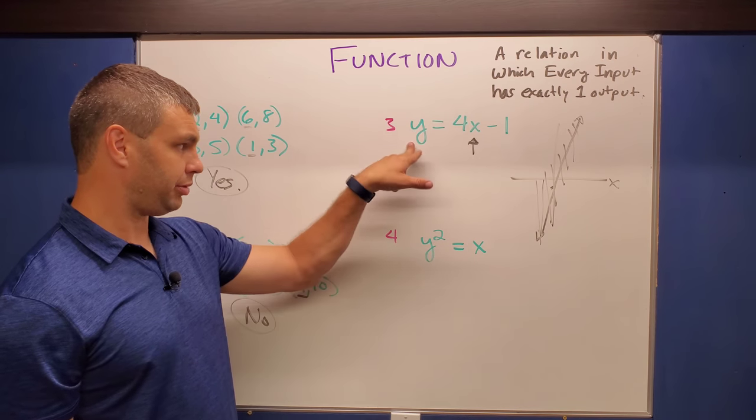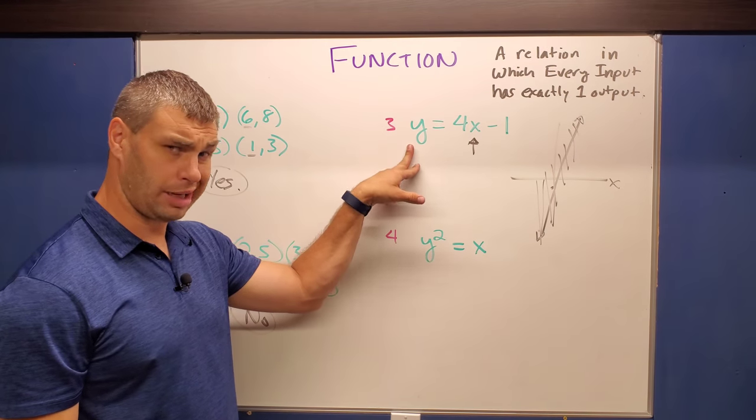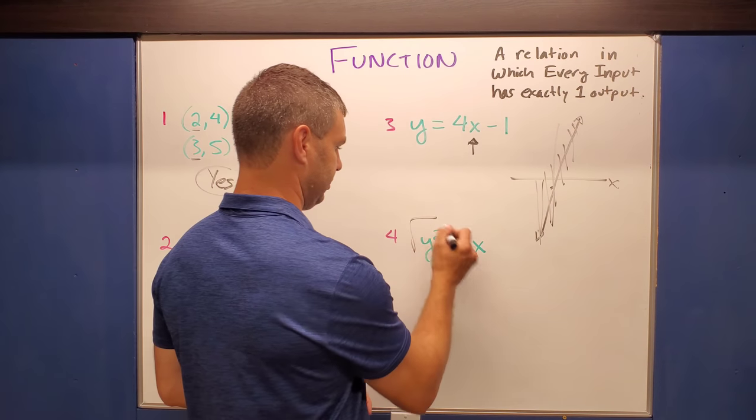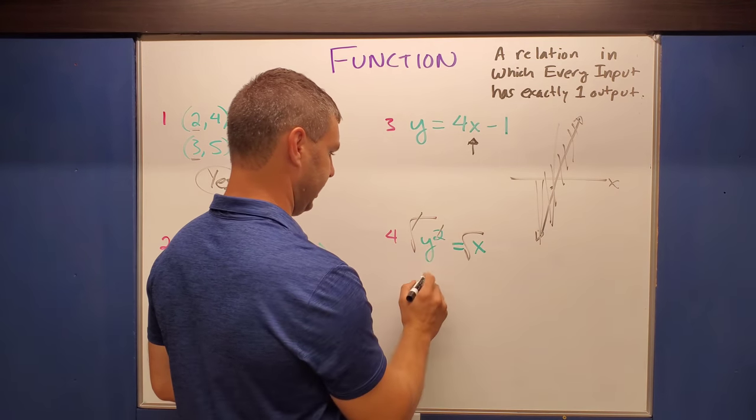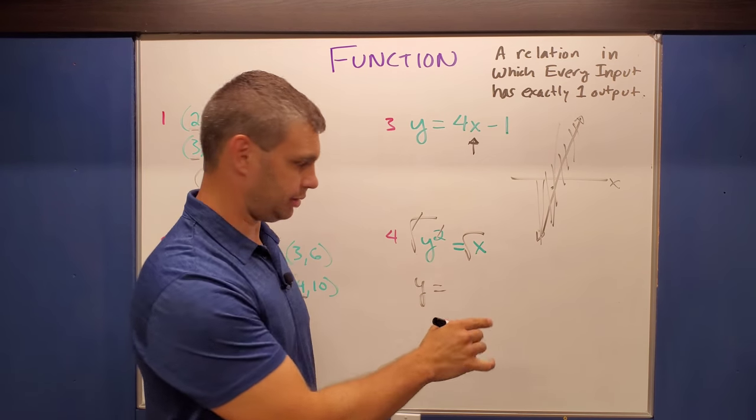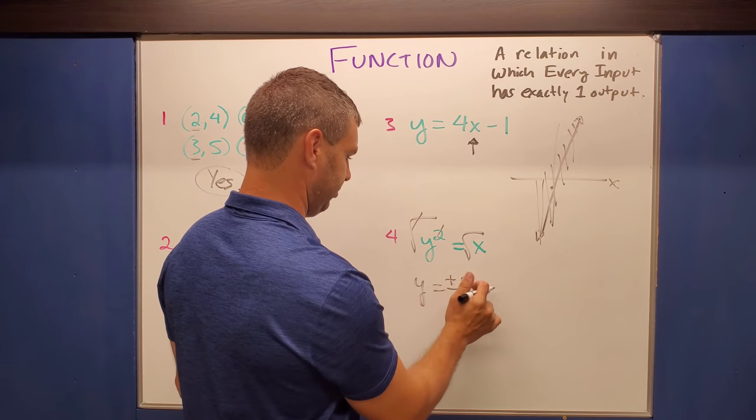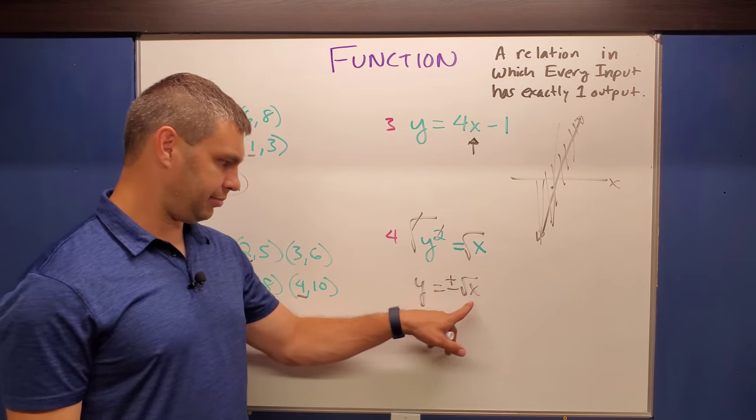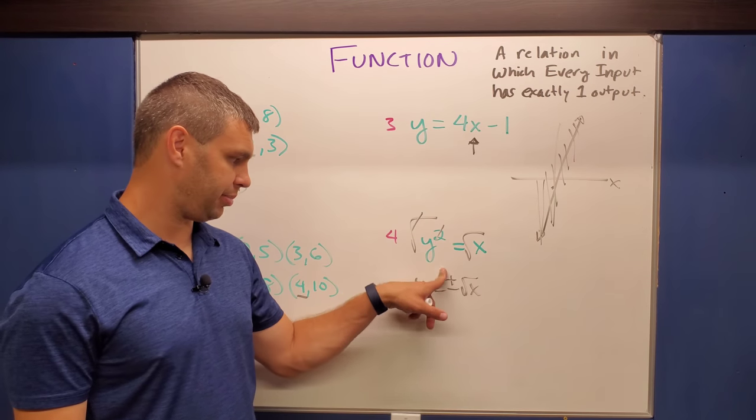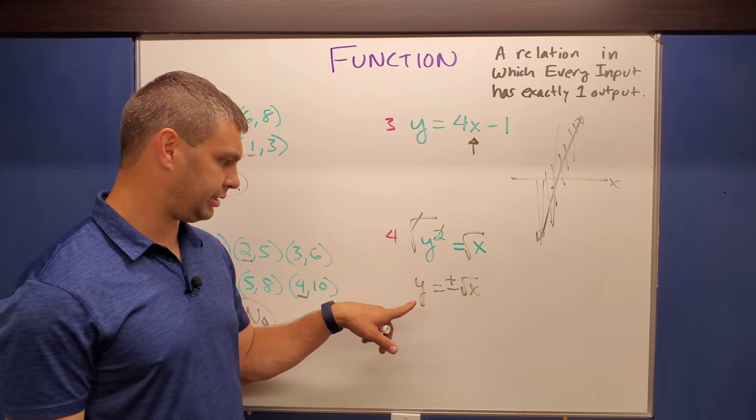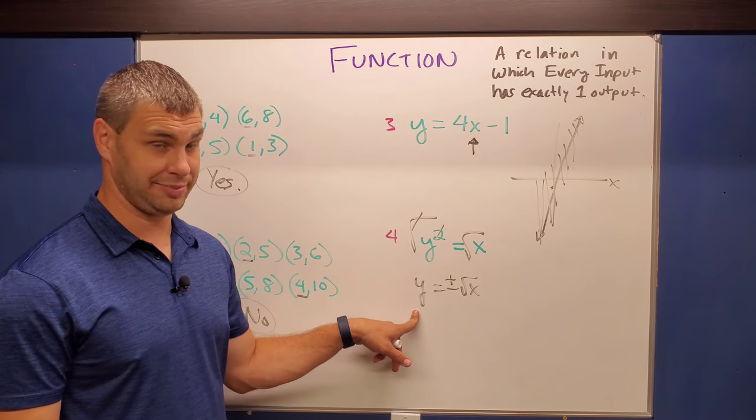What about this one? Again, what we did in number three is that it was solved for y and number four, if I solve this for y really quick, take the square root of both sides. And this gives me now y equals, and remember when you take the square root of something, it's either plus or minus. So plus or minus square root of x, whatever x happens to be. So this time x could actually be both the positive and negative case of that square root. And so because of that, y will have multiple outputs.